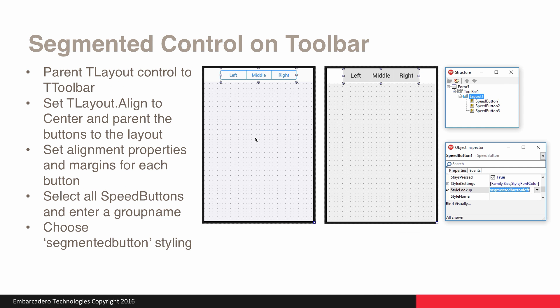When creating a segmented control, if you're using it on the toolbar, first parent a T-Layout to the toolbar control, then set T-Layout.Align to Center and parent the buttons to the layout. Select the alignment for the first button to Left, the second to Center, and the last to Right. You need to shift-select all the buttons you want as part of the segmented control and set a group name — the same group name for all of them. Then you can select each button and apply the segmented button styling to customize the look.